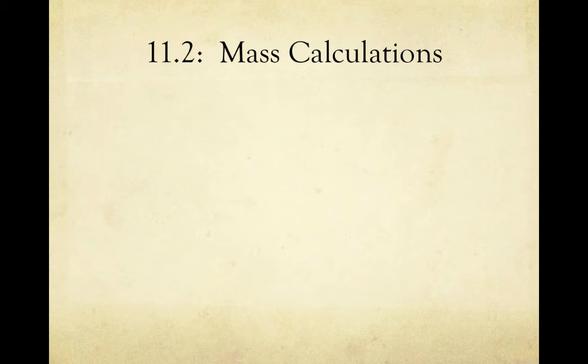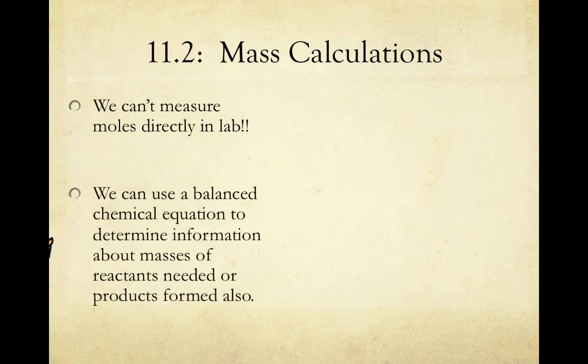So far we've been looking at using a balanced equation to determine the mole ratio of reactants and products in a reaction and convert from moles of one reactant or product to moles of another. However, as you know, in lab we can't measure moles directly. Therefore, if we're going to do calculations to help us determine how much reactant or product we need or will form in lab, we need to do them in mass.